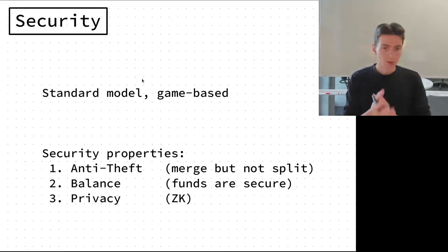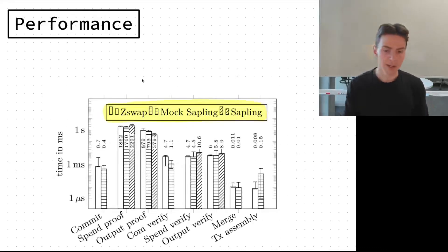We prove the system secure in the standard model in the game-based setting. We have properties like anti-theft, which means we can merge transactions but not split them. We have balance which says funds are secure so you cannot spend funds that are not yours. And then privacy that you cannot see what happens on the blockchain.